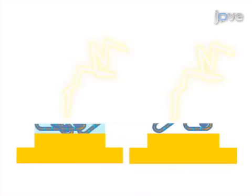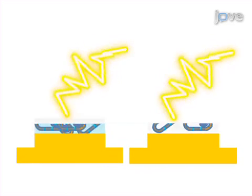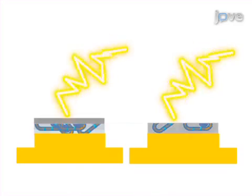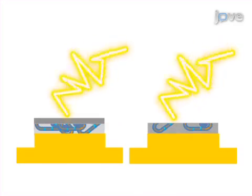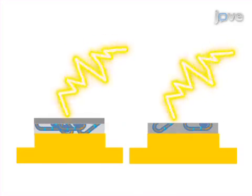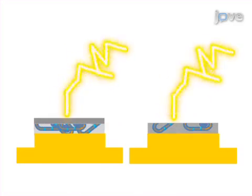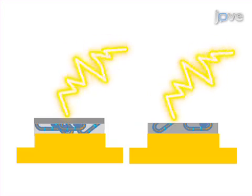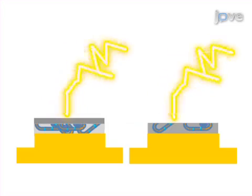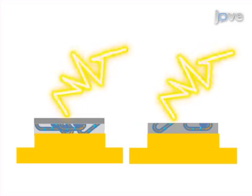Next, a replica is generated by evaporation of carbon and platinum over the fractured surface. The original specimen is digested from the replica, which is retrieved onto a transmission electron microscopy specimen grid.